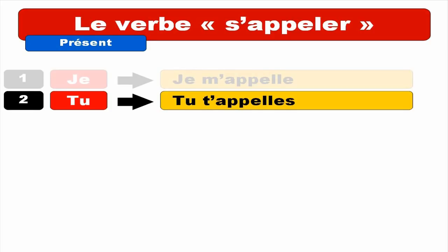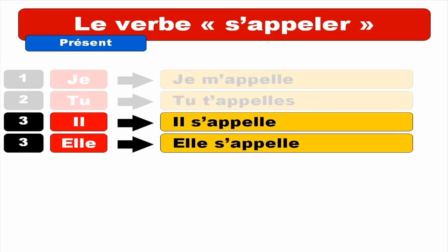And then come IL and ELLE — so masculine form IL. Usually for IL or ELLE (third person singular) you get SE, but as we start with a vowel, the A disappears and you get IL S'APPELLE. Repeat. IL S'APPELLE. And then the feminine form — ELLE S'APPELLE. Repeat. ELLE S'APPELLE.